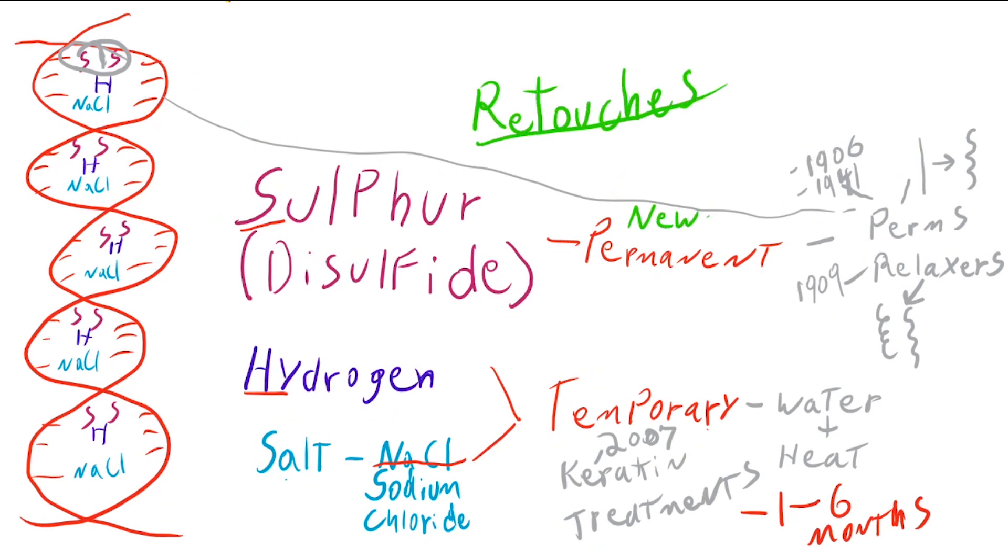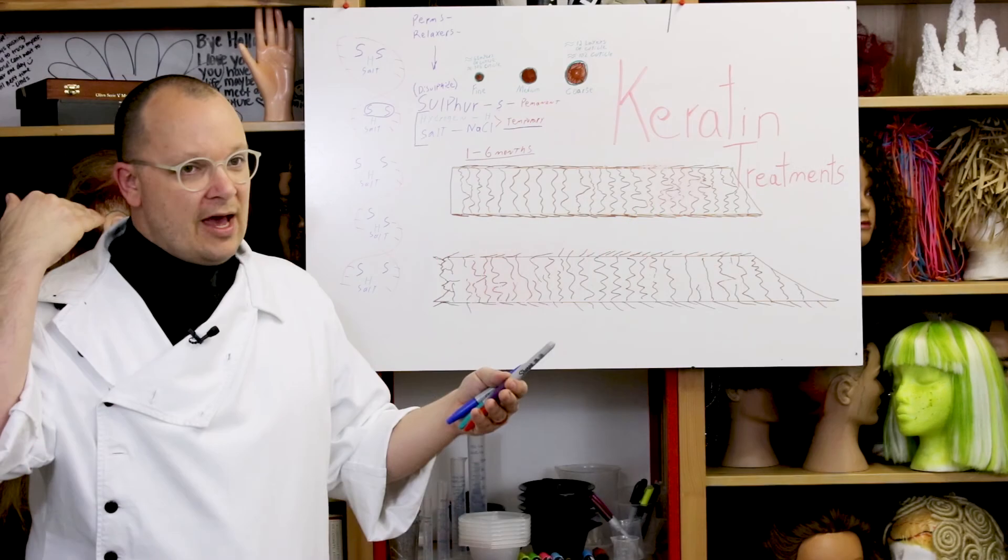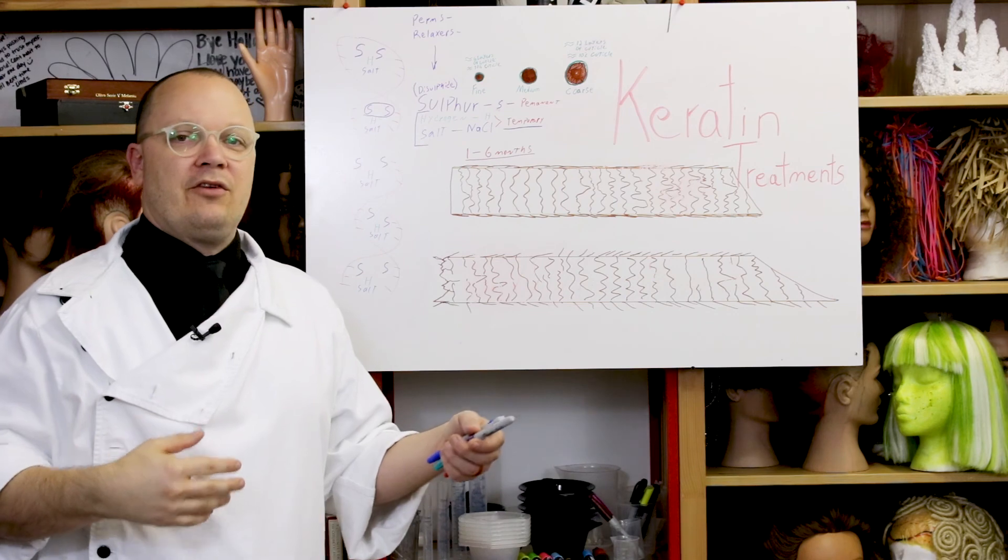Since keratin treatments are temporary, yes, the more we stretch these bonds, for the most part, once that keratin treatment has run out, it's run out. So the retouching process on keratin treatments is just to redo them. Roots to ends, everything, treat the previous hair as untreated hair. Unless you're dealing with some other issues where the hair can't handle as much heat on the ends, that's going to be a professional decision to make.